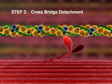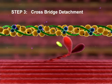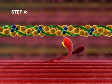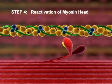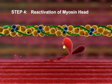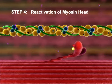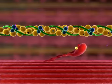Step 3: Crossbridge Detachment. When another ATP binds to the myosin head, the link between the myosin head and actin weakens, and the myosin head detaches. Step 4: Reactivation of the myosin head. ATP is hydrolyzed to ADP and inorganic phosphate. The energy released during hydrolysis reactivates the myosin head, returning it to the cocked position.